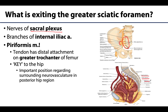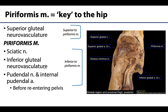The piriformis will traverse the greater sciatic foramen and its distal tendon will insert on the greater trochanter of the femur. Having a muscle belly here to distinguish from the neurovasculature can really serve as an important landmark for getting organized in this region. This is often referred to as the key to the hip, and when dissecting this area I always try to locate the piriformis first as it helps organize the next step.